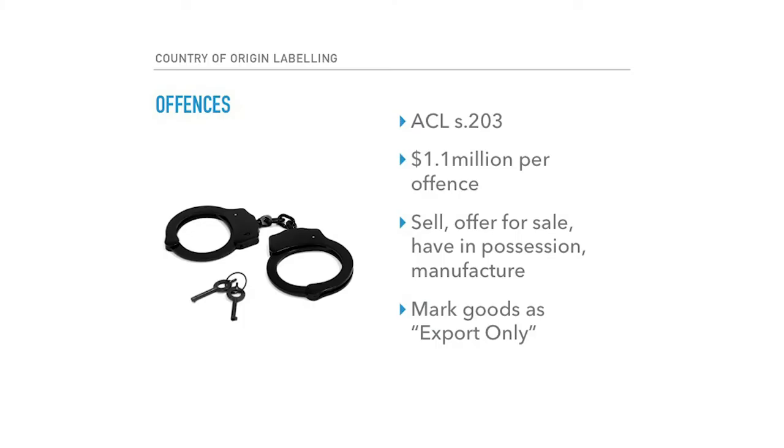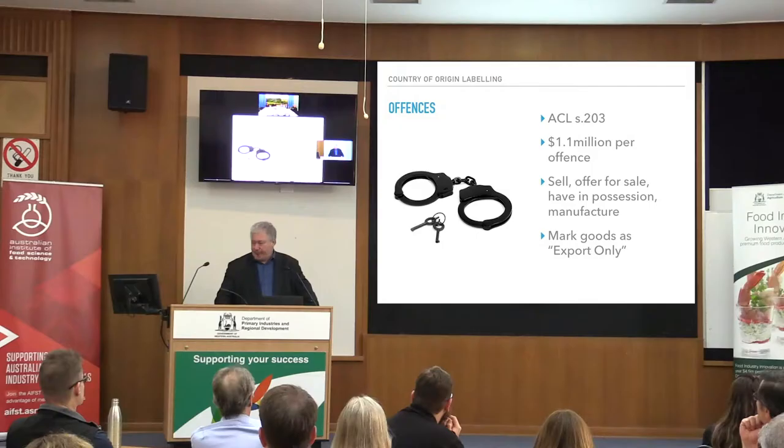Can you use stickers? Yes, provided the sticker carries the required information — and make sure it doesn't cover up any other mandatory information. It needs to be a deliberate exercise: find a spare bit of package space and stick it there. The Australian Consumer Law section 203 provides a financial penalty for non-compliance of $1.1 million. This is a lot more than you are used to in food standards regulation. If you have five products and get them wrong, that's $5.5 million. The offences apply to selling, offering for sale, having in possession for sale, or manufacturing — quite broad offences.